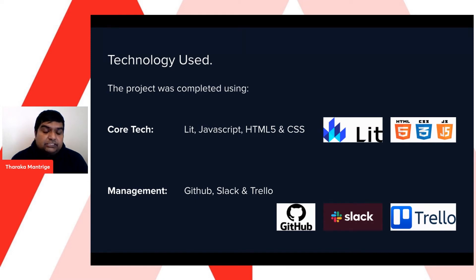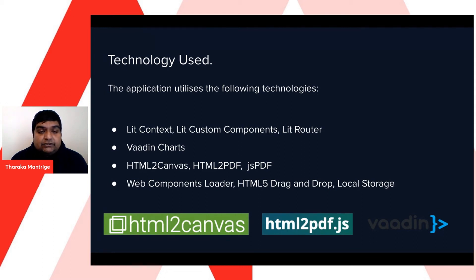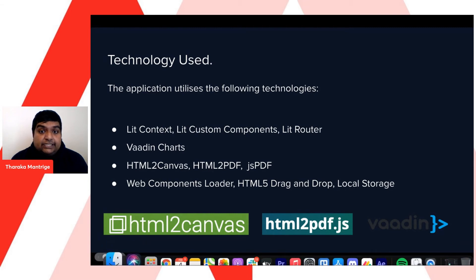In terms of project management technology, our code was assembled through GitHub branch management. We used Slack for team communication and Trello for Kanban boards. We also used several external libraries to build the functionality of the application — to introduce context, custom components, and routing, and to display client data using Vordingcharts. Three separate libraries had to be implemented to generate the PDF file. We also used local storage, the web component loader, and the HTML drag-and-drop API for drag-and-drop functionality.